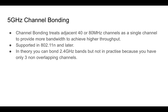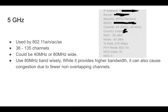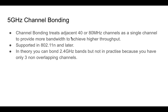Next, we'll talk about 5 GHz channel bonding. Channel bonding effectively treats adjacent 40 or 80 MHz channels as a single channel, with the goal of providing more bandwidth and higher throughput. Channel bonding is supported in 802.11n and later — so even though 802.11a supports 5 GHz, channel bonding is not supported in 802.11a; it has to be 802.11n, ac, or ax. In theory you could bond 2.4 GHz channels, but in practice you won't get much value since you only have three non-overlapping channels.